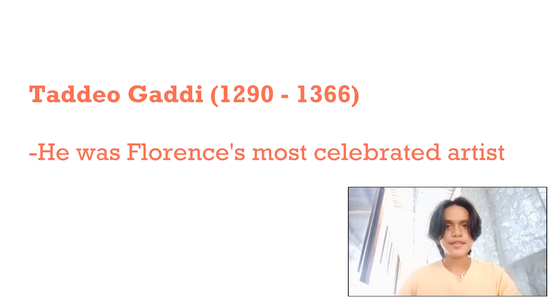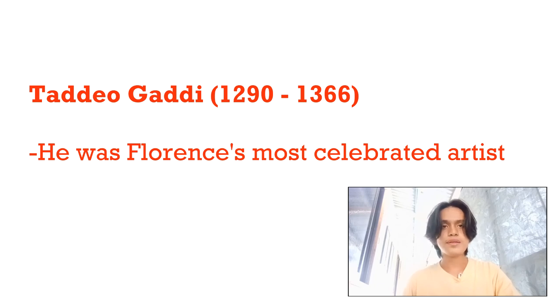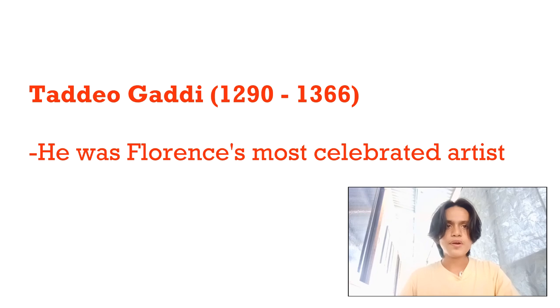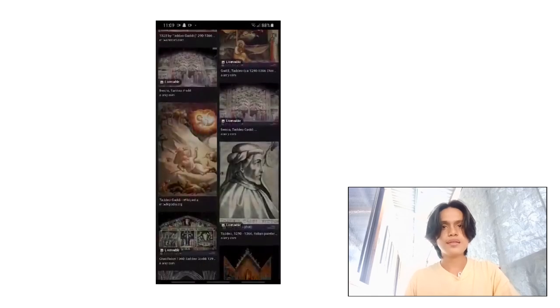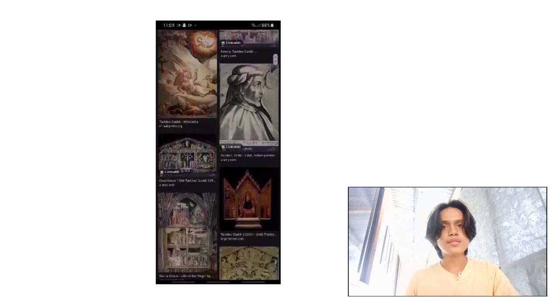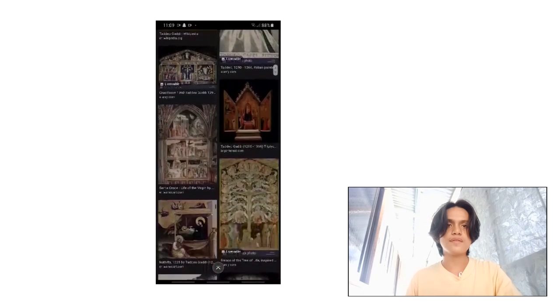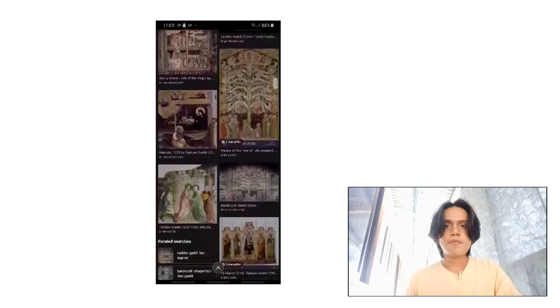The next artist is Taddeo Gaddi, born in 1300 and died in 1366. He was a medieval Italian painter and architect, and the son of Gaddo di Zanobi. He was a member of Giotto's workshop from 1313 to 1337 and was considered Giotto's most faithful and talented pupil, though lacking his master's comprehensive vision. He was placed at the top of a list of Florence's most renowned artists from 1347.